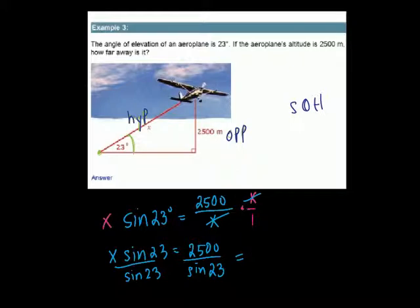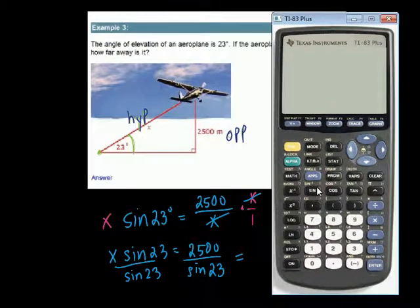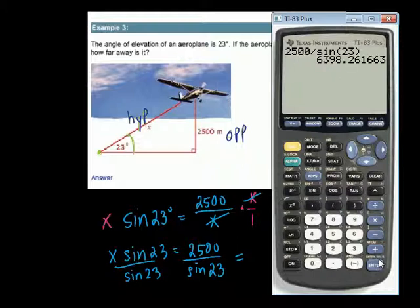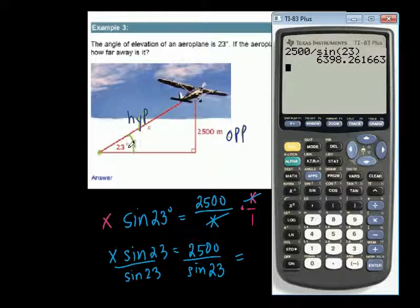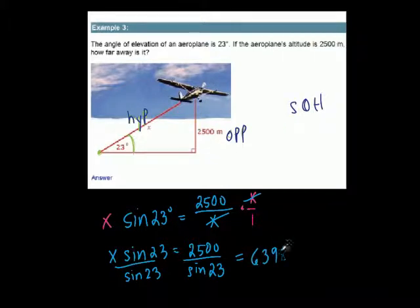Now use the calculator: 2,500 divided by sine of 23 equals 6,398. Does that make sense? This side is 2,500 and it's a pretty low angle, so the hypotenuse is going to be a whole lot longer than 2,500 — and it is. So X equals approximately 6,398 meters. That's how you find the hypotenuse.